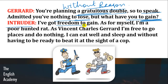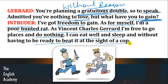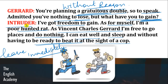Intruder says: 'As for myself, I am a poor hunted rat. As Vincent Charles Gerard, I am free to go places and do nothing. I can eat well and sleep without having to be ready to beat it at the sight of a cop.' Intruder kehta hai — tumhe marke mujhe azaadi mil jaayegi. Abhi mein ek poor hunted rat hoon — police mera pichha kar rahi hai. Agar mein Vincent Charles Gerard ban ke zindagi jiyun ga, toh mein azaadi se jiyun ga, idhar udhar ghoom bhi pahunchunga, mujhe kisi ka dar bhi nahi hoga. Mein aaram se khaaunga, aaram se soyunga, aur jaisi hi police ko dekhun, mujhe wahaan se bhaagna nahi padega — isliye woh apni identity change karke Gerard ki identity se jeena chahta hai.